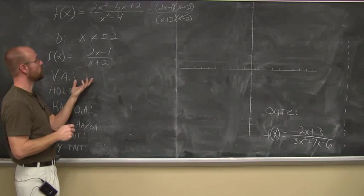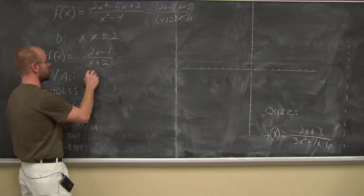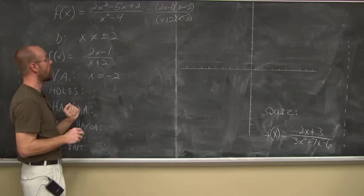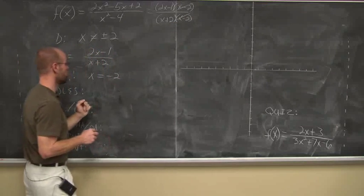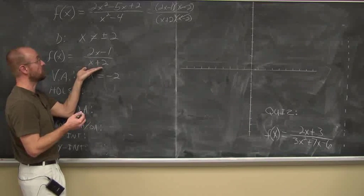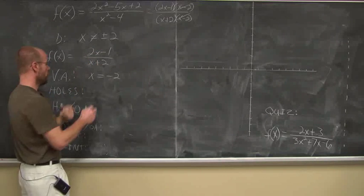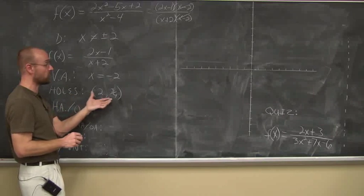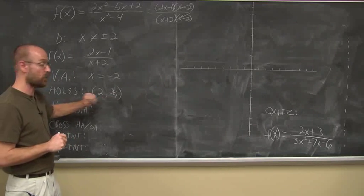The vertical asymptote is the domain restriction that still exists. We see x equals negative 2 remains, so x equals negative 2 is my vertical asymptote — the value my graph can never cross. The domain restriction that reduced away was positive 2, so that is where we have a hole. Plugging positive 2 into the reduced function: 2(2) - 1 equals 3, over 2 + 2 equals 4, giving 3/4. So the hole in my graph is at the point (2, 3/4), marked with an open circle.